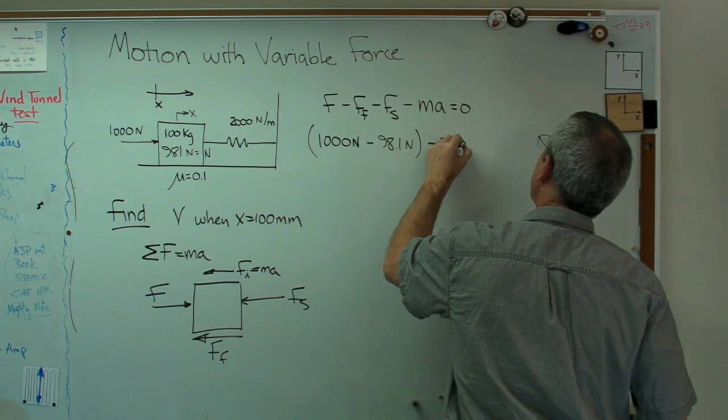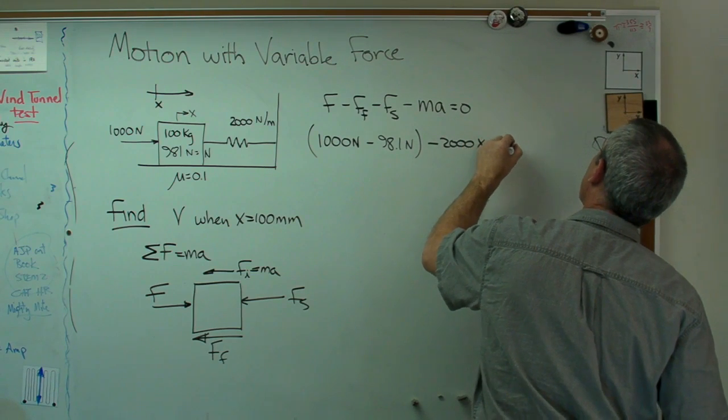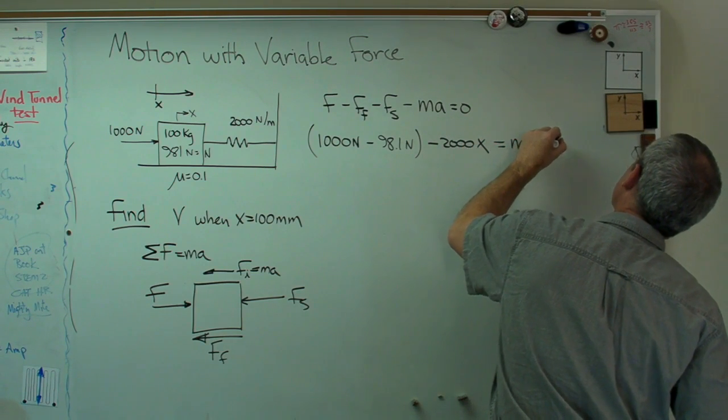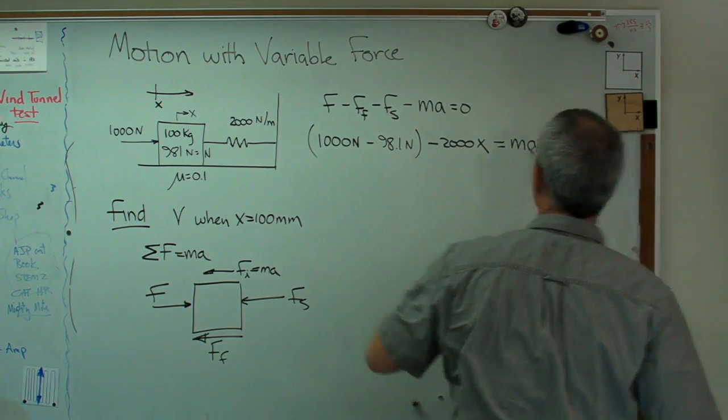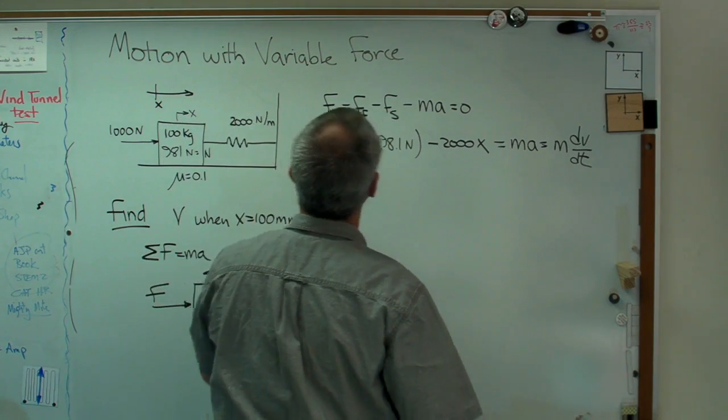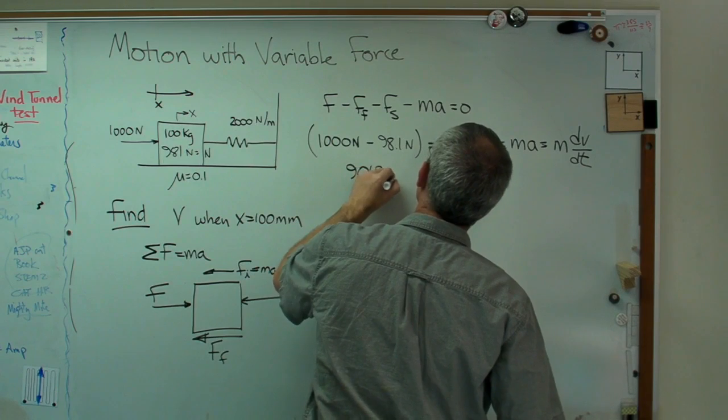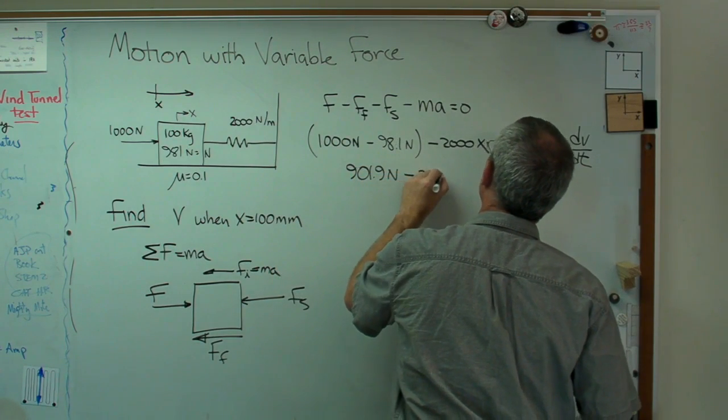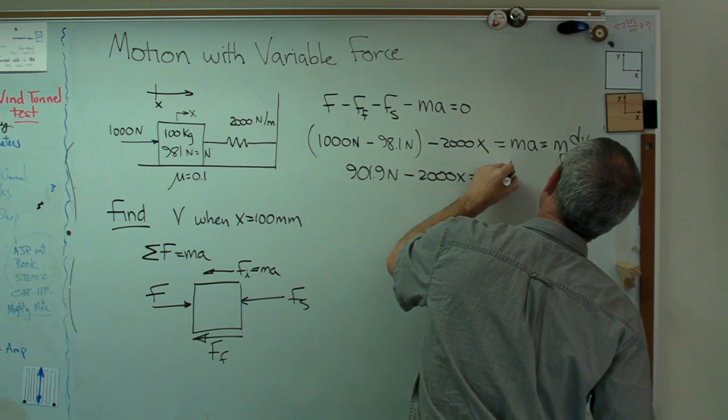Well, the spring force is 2,000x. I'm just going to move this over here and call that ma. And it's also m dv/dt. And we're going to get to that here in a minute. Well, that turns out to be, let's see, it's going to be 901.9 newtons minus 2,000x equals 100 dv/dt.